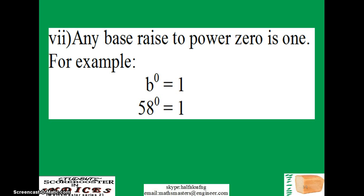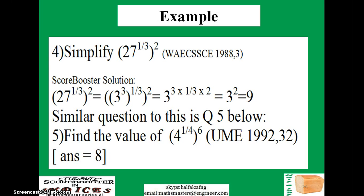Another very important rule: whenever you come across anything raised to power 0, it equals 1. For example, b raised to power 0 is 1; 58 raised to power 0 is 1; one million raised to power 0 is 1. Take note of this.